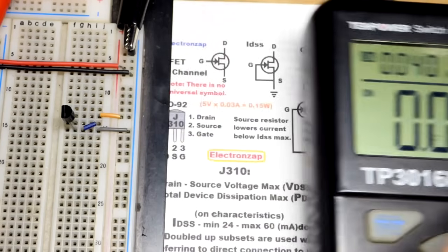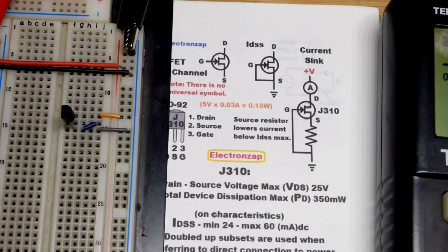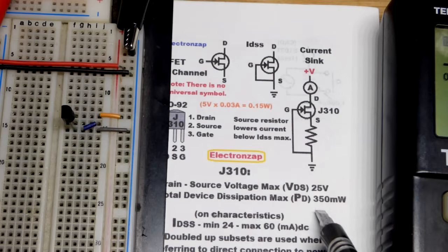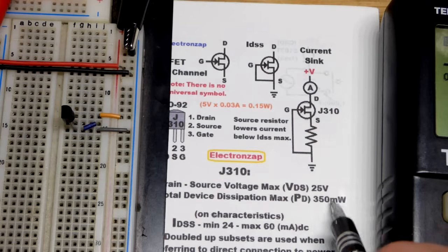So there you can see, it looks like somewhere around 20 milliamps of current. For some reason, it's flipping around. We're going to raise the voltage in a little bit. The main thing is we have to make sure we don't exceed 350 milliwatts.